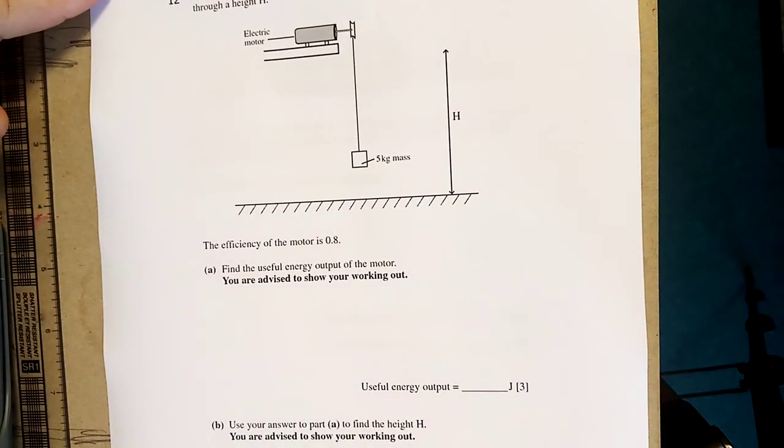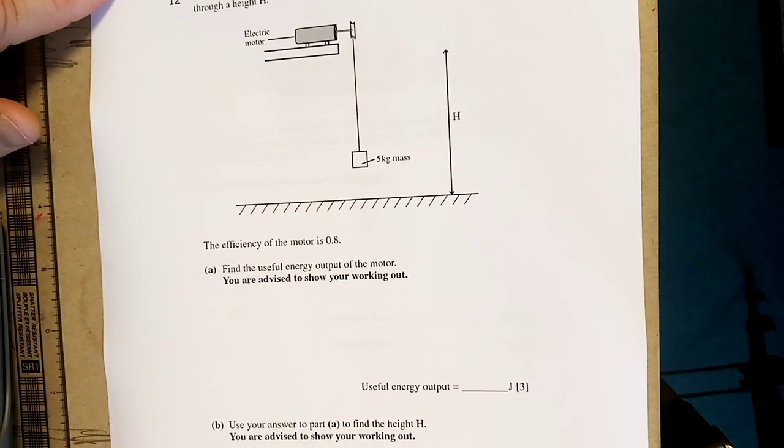An electric motor uses 300 joules of electric energy to raise a mass of five kilos to a height h. The efficiency is 0.8.